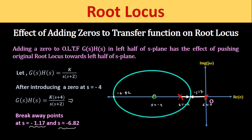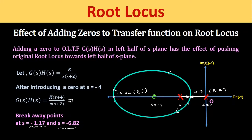Drawing the root locus for K(S+4)/[S(S+2)]: the branches from poles at S=0 and S=-2 approach the breakaway point at S=-1.17, divide into two branches, and move towards the other breakaway point at S=-6.82, which becomes a break-in point as it lies between the zero and S=-infinity.